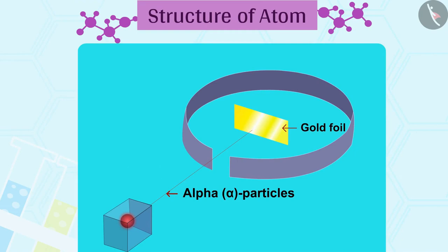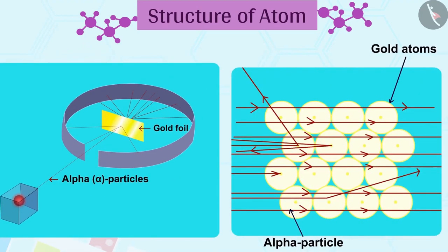1. Most of the fast-moving alpha particles passed straight through the gold foil. 2. Some of the alpha particles were deflected by the foil by small angles. 3. One out of every 12,000 particles appeared to rebound.